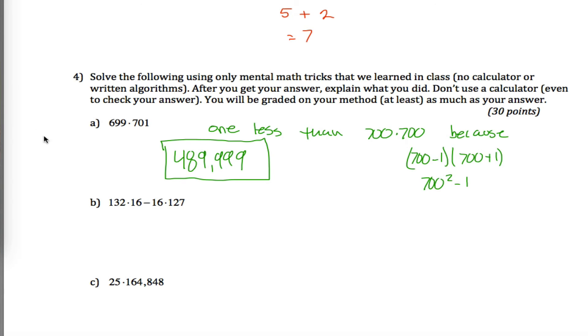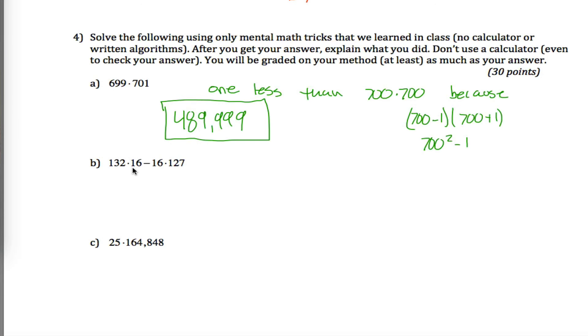This next problem looks a little intimidating, 132 times 16 minus 16 times 127. I don't know how to figure that out. But fortunately, you have a 16 in each of these terms, so you could factor out a 16 and say it's 16 times 132 minus 127. Well, 132 minus 127 is just 5, and 5 times 16 is 80. So this answer right here will be 80, and maybe I'll write because 16 times 132 minus 127 is just 16 times 5, which maybe you can do in your head, or you could cut this in half and double this to get 8 times 10, but something like that to get you 80.